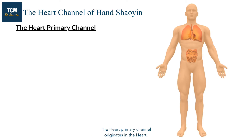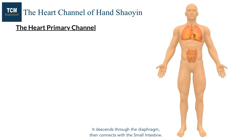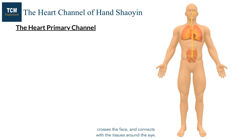The heart primary channel originates in the heart, emerging from the blood vessel system surrounding the heart. It descends through the diaphragm, then connects with the small intestine. There is a branch from the heart that goes up along the esophagus, crosses the face, and connects with the tissues around the eye.